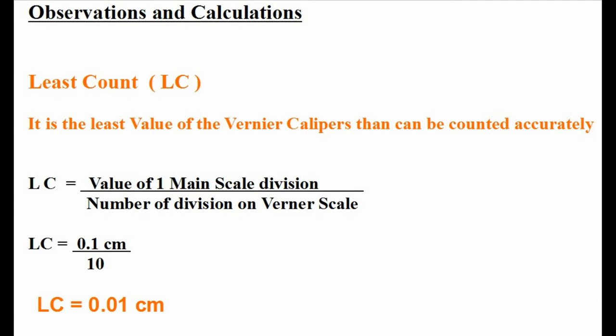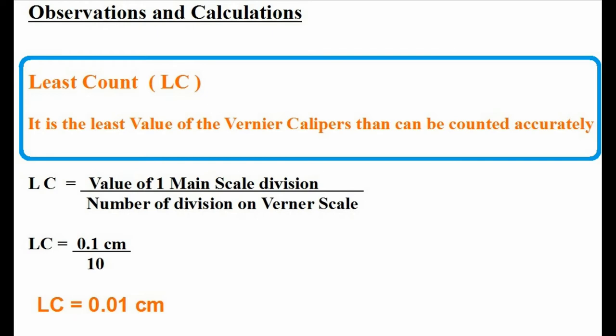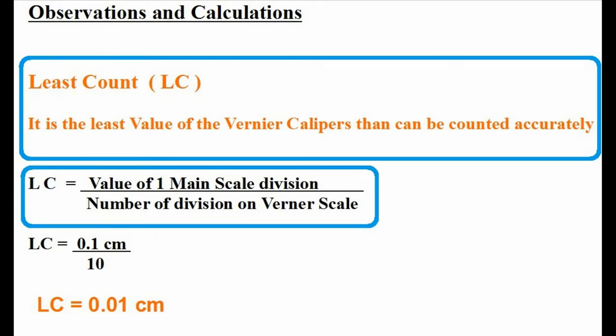Now we can start measurements. To begin with, we need to find out the least count of the Vernier caliper device. So what is least count? Least count is the least value of the Vernier calipers that can be counted or measured. Here is an equation to find the least count.